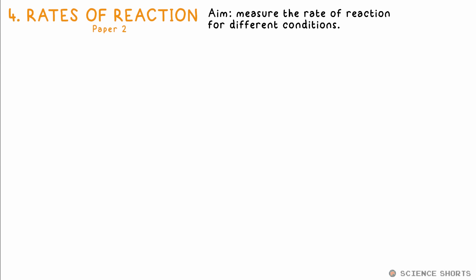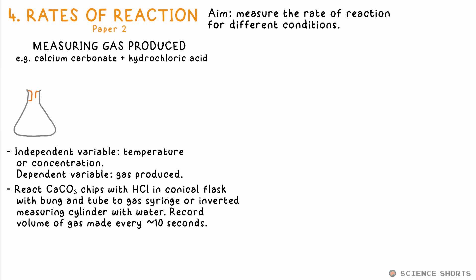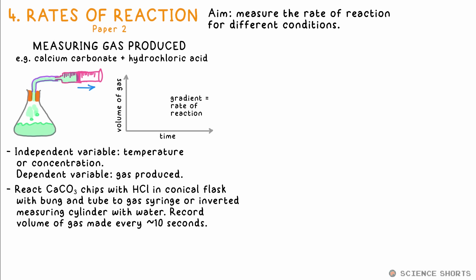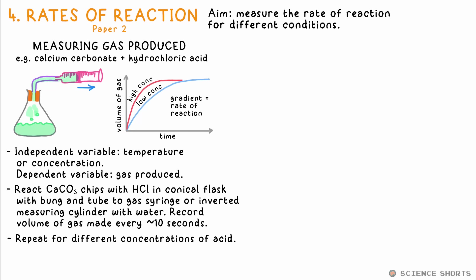Chem 4: rates of reaction. There are two practicals we can do to observe the rate of reaction. The first: if a gas is made from a reaction, we can do it in a conical flask with a tube leading to an inverted measuring cylinder filled with water, allowing us to measure the volume of gas made every 10 seconds. We plot this against time to see the reaction curve — the gradient at any time is the rate at that time. We can then change a variable, say temperature or concentration, as our independent variable, and plot multiple curves on the same axes to compare them.